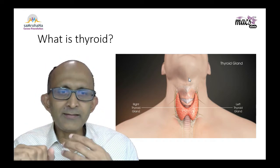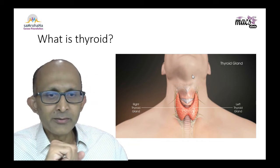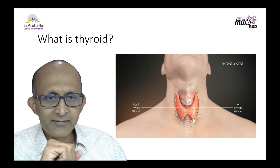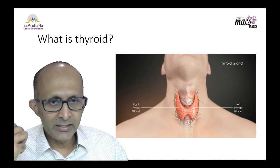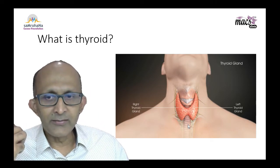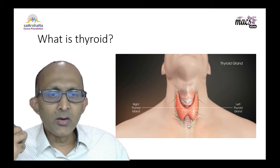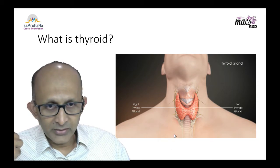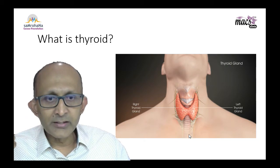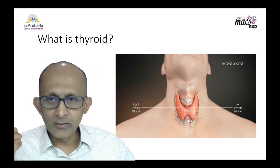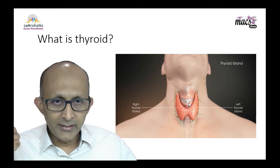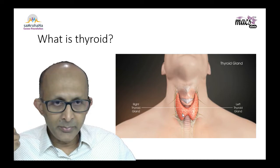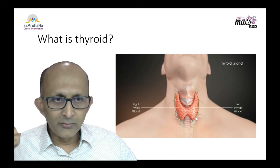Thyroid is a butterfly-shaped organ — you can see here — situated in front of your neck. The structure you see here is what is called the trachea, or the windpipe, and the thyroid gland hugs the windpipe on both sides. That is how the thyroid is situated.